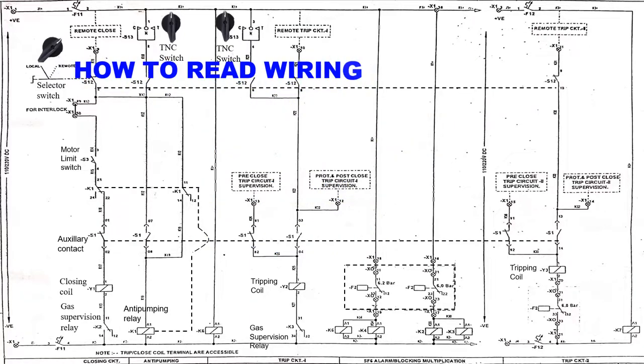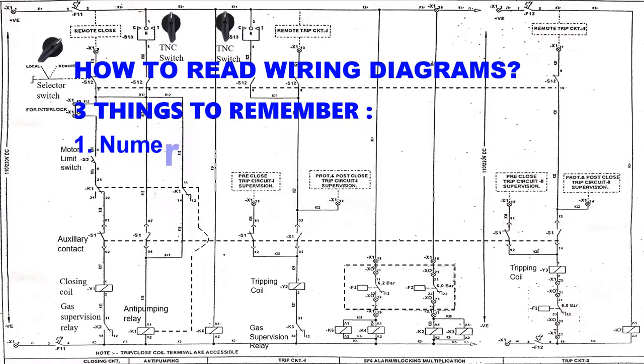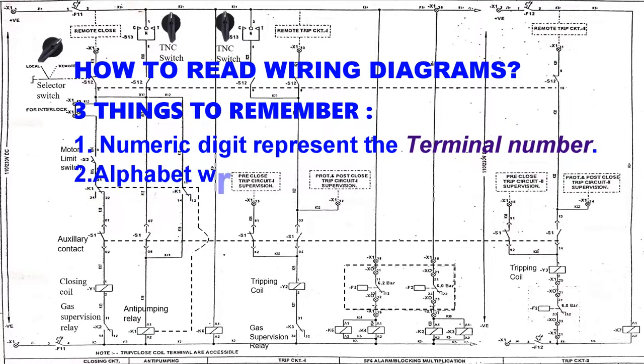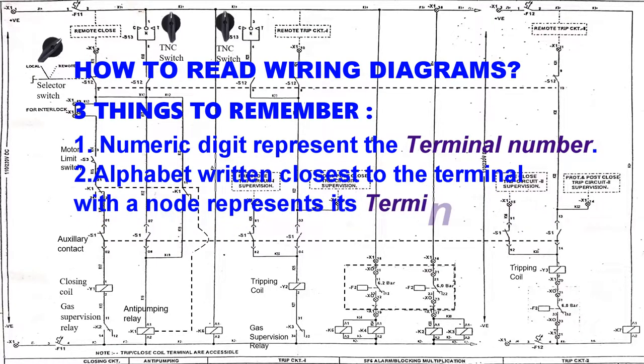Always remember three things: first, the numeric digit shown always represents the terminal; second, the alphabet written closest to the numeric digit represents the terminal block; and last, the connecting branch of the network represents the wiring ferrule.